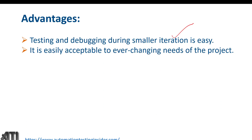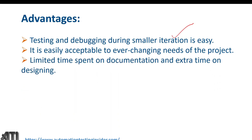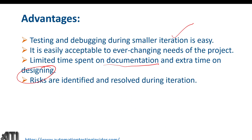It is easily adaptable to ever-changing needs of the project. This was the biggest drawback in the waterfall model — we could not change requirements — but here we can accept changing requirements. Limited time is spent on documentation and extra time on designing. Risks are identified and resolved during each iteration — we'll cover risk in more detail in the next model, the spiral model.